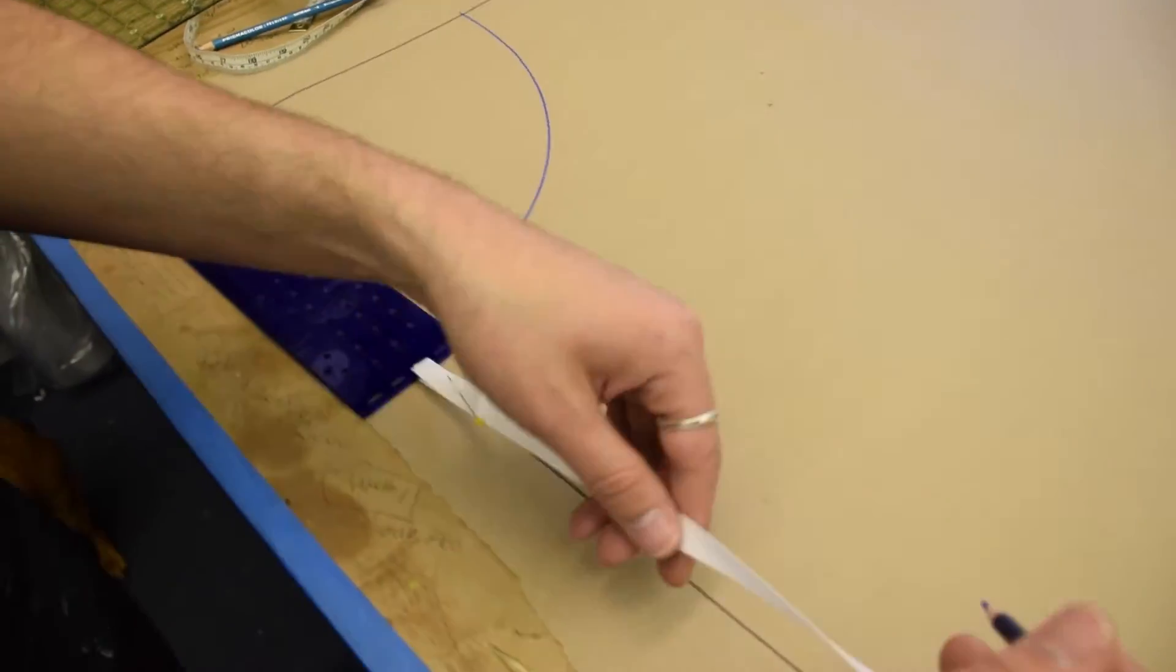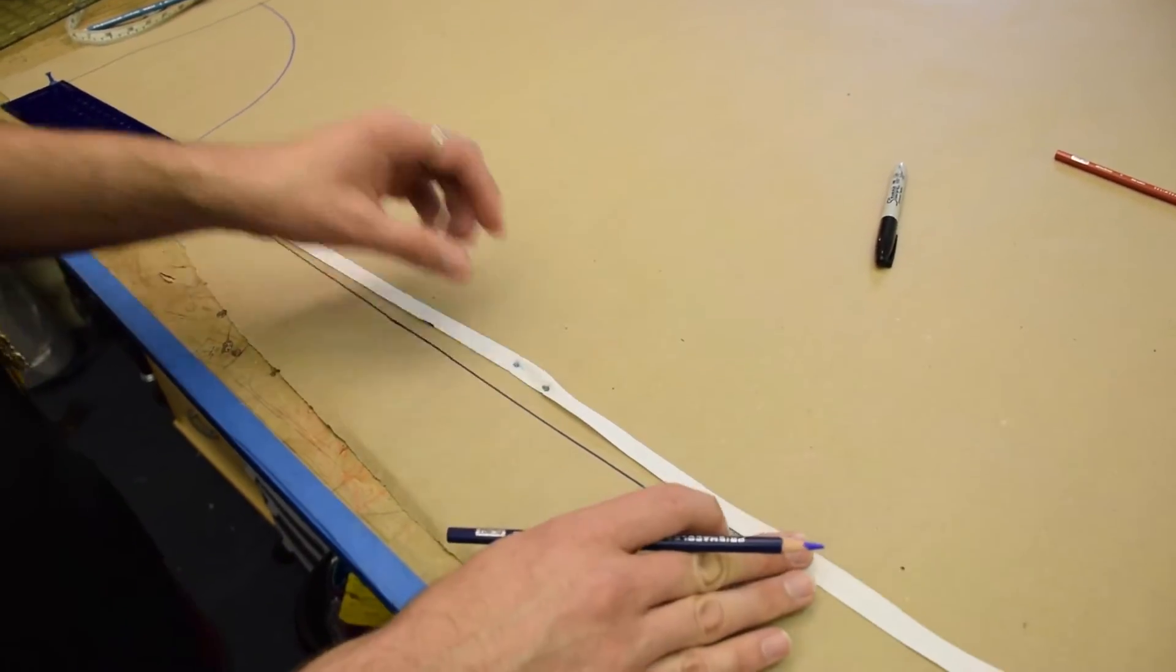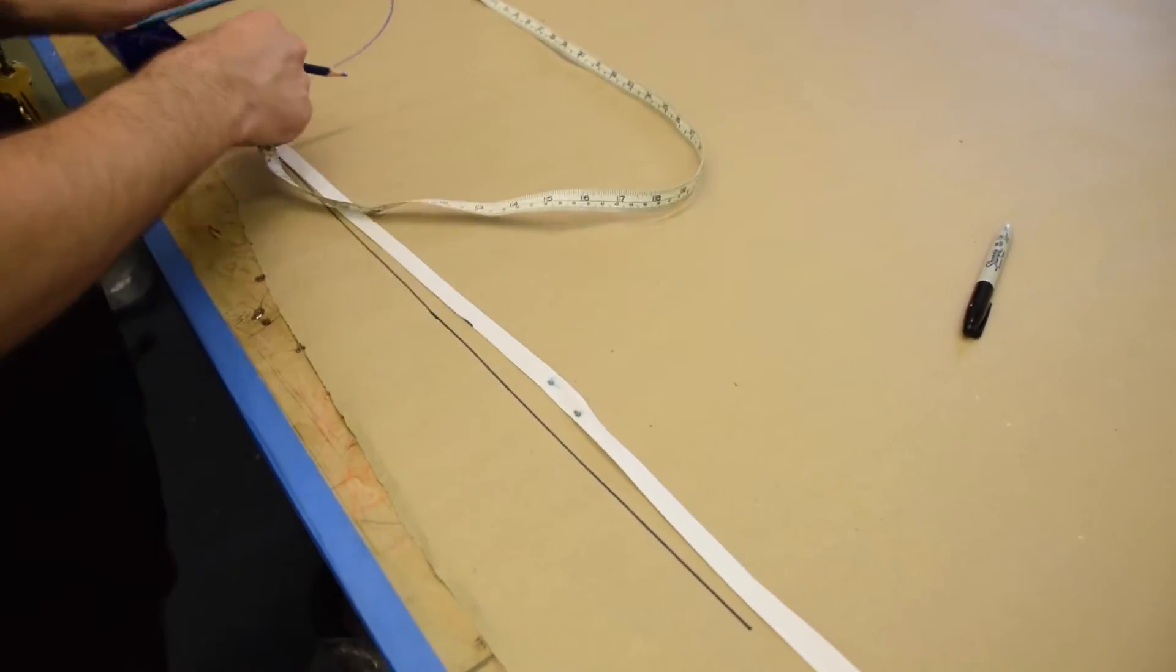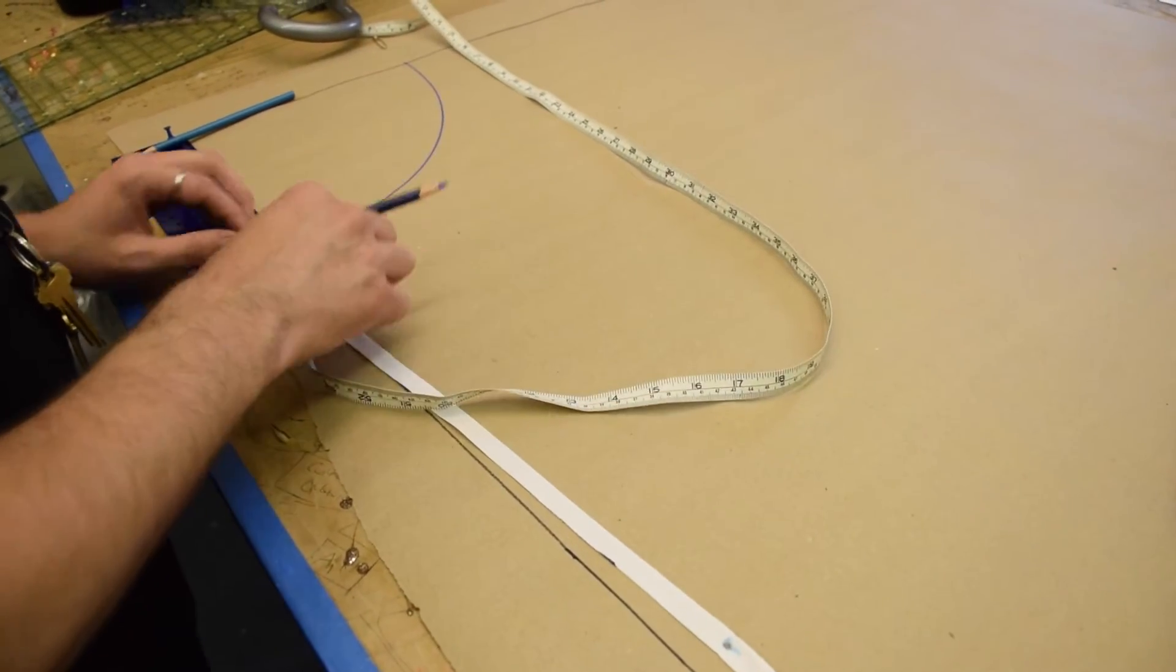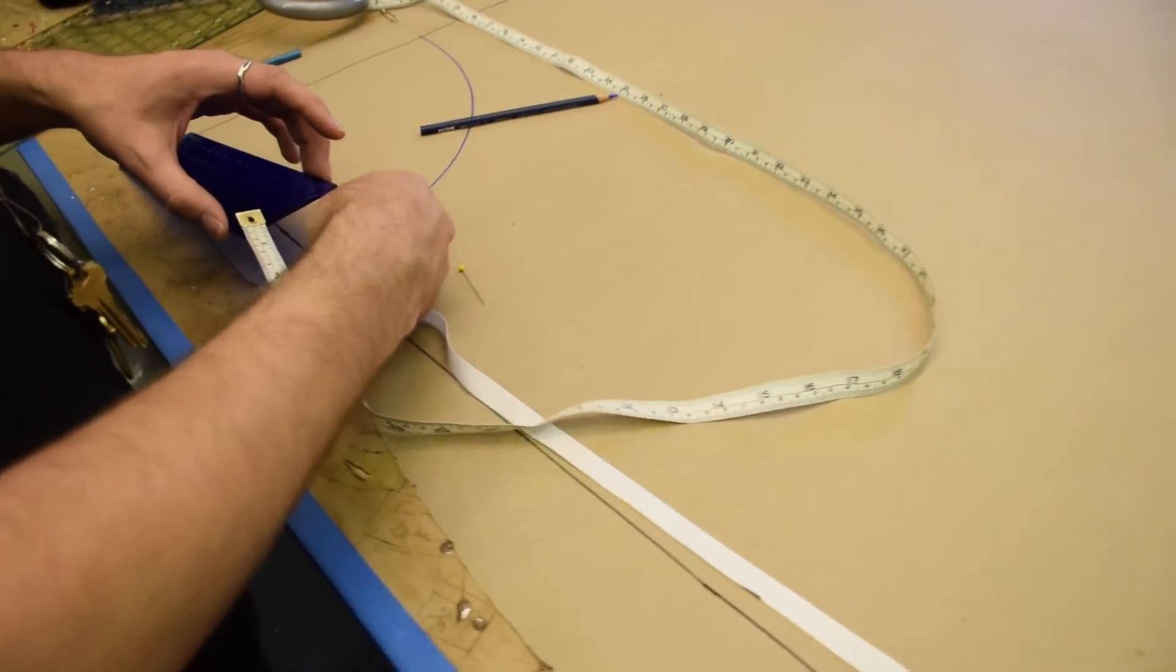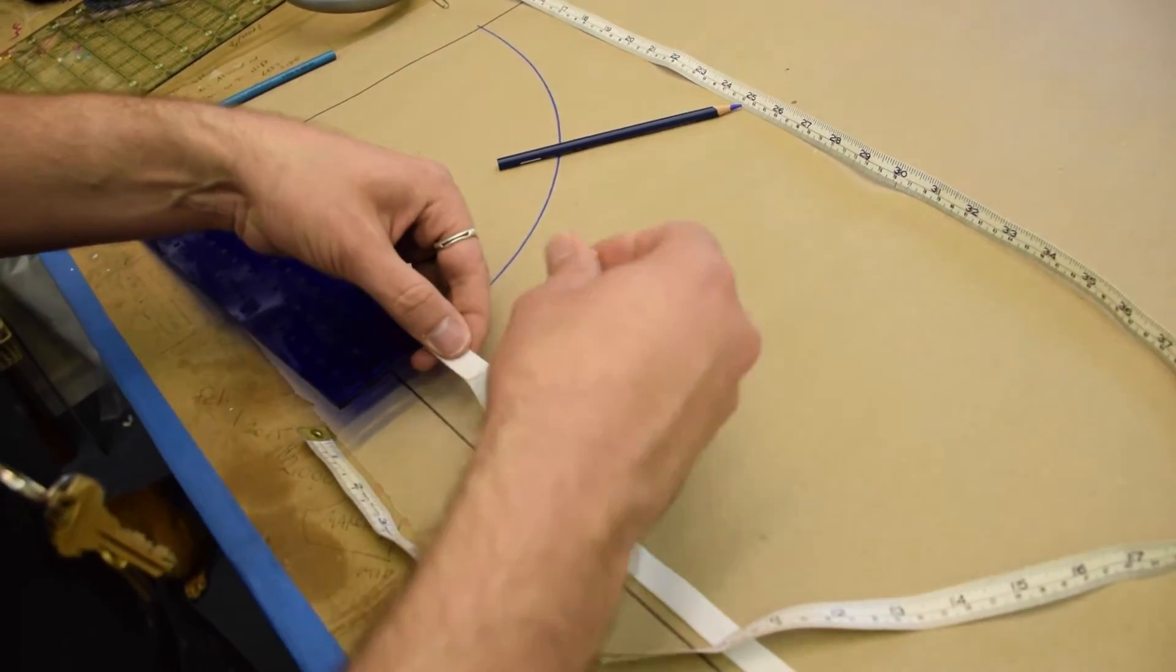And then we're going to use our same hem. Actually, let's do a different hem. Let's say that this is short, like for a skating costume. I want to move my tape, my ribbon, to the same row as my axis so that you're getting good, true measurements.